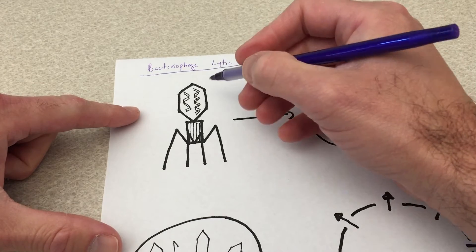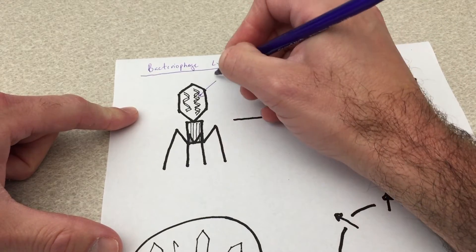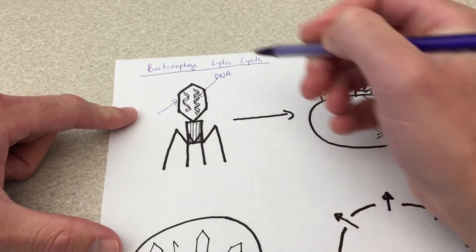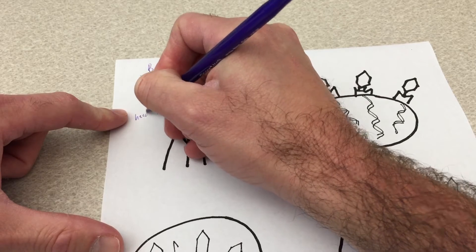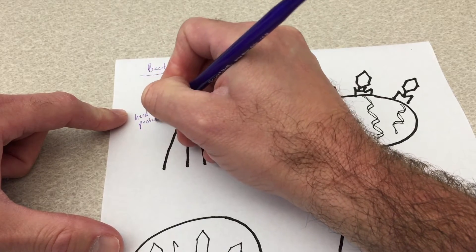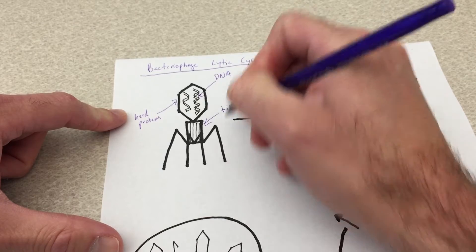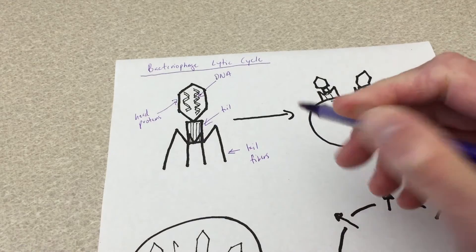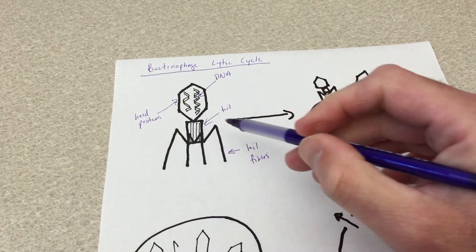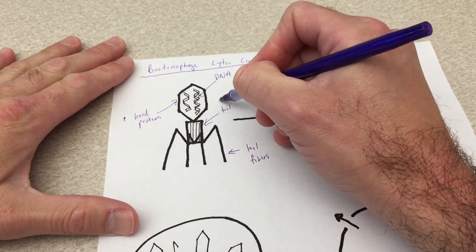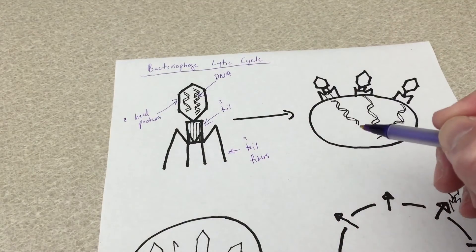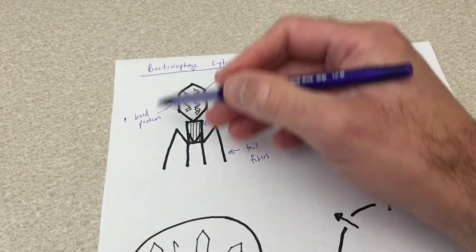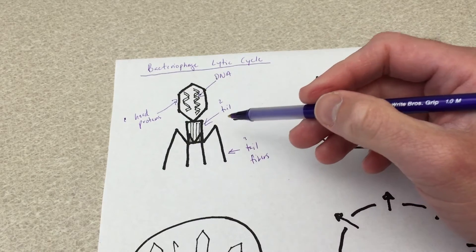Bacteriophage viruses are basically nothing more than DNA that is protected by proteins, including the head proteins, tail, and tail fiber proteins. These three basic types of proteins—the head, the tail, and the tail fibers—make up this very simple proto-organism of a bacteriophage.